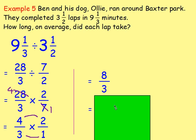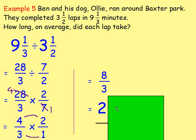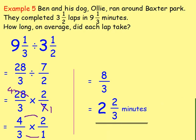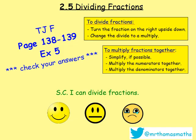Because we have an improper fraction, rewrite it as a mixed number. 8 divided by 3: how many 3s in 8? 2, with a remainder of 2. So each lap would take 2 and 2 thirds minutes — and that's your answer! Try some questions in the TJ book, pages 138–139, Exercise 5. There are also lots of questions online or in other textbooks for dividing fractions. Practice them and check your answers. Best of luck — any problems, give me a shout. See you later!